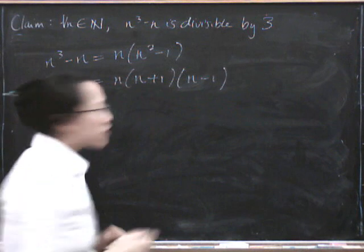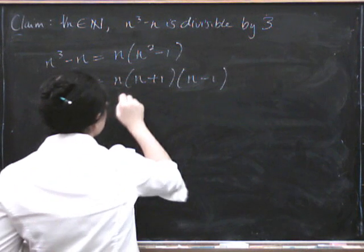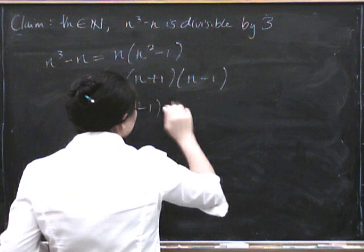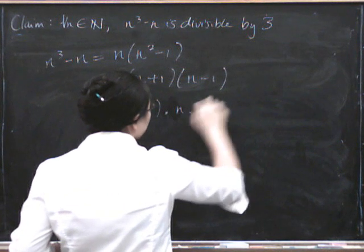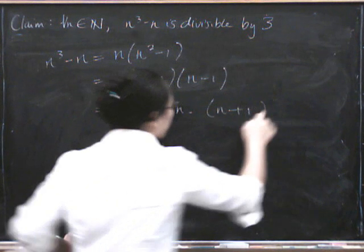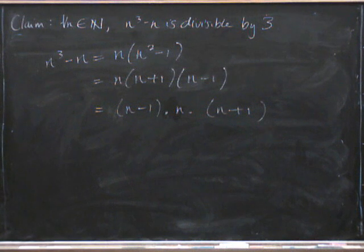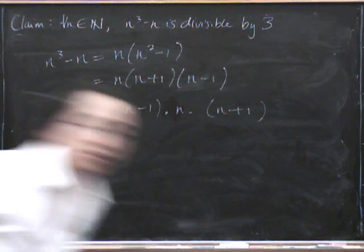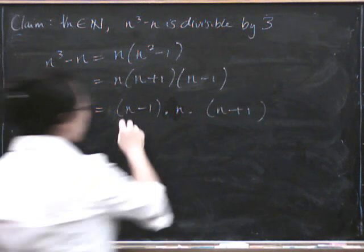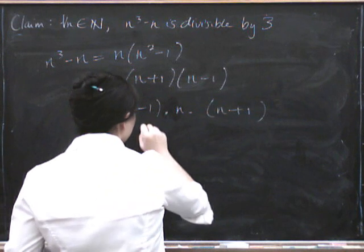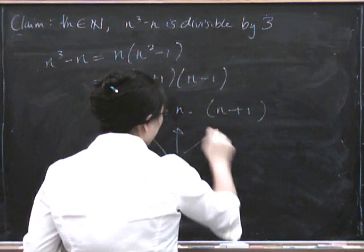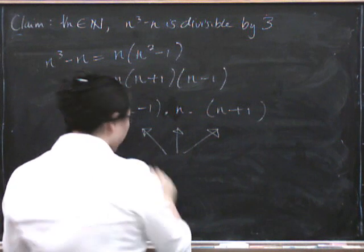Now I'm just going to reorder those factors a little bit. So we've got n minus 1 times n times n plus 1. Now, does this remind you of anything from the previous one? These three numbers are three consecutive integers.